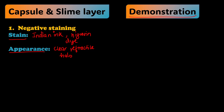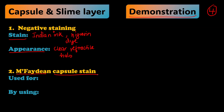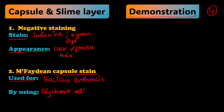The next method is the M'Fadyean capsule stain. This method is species-specific — it is specifically useful for the demonstration of Bacillus anthracis. For this stain, the polychrome methylene blue stain is used.